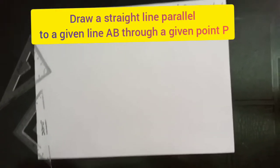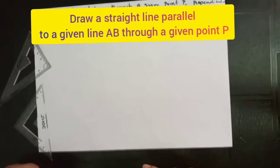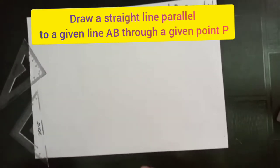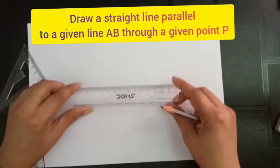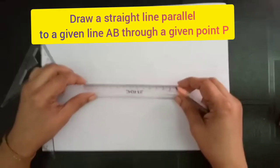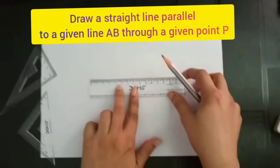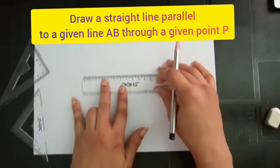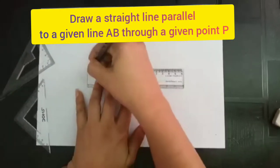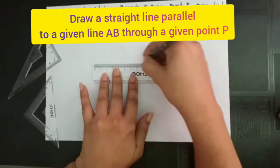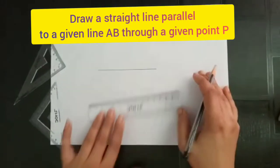Namaste children, today I am going to show you how to draw a parallel line using set squares. First, draw a line AB of length 10 centimeters and mark point P.